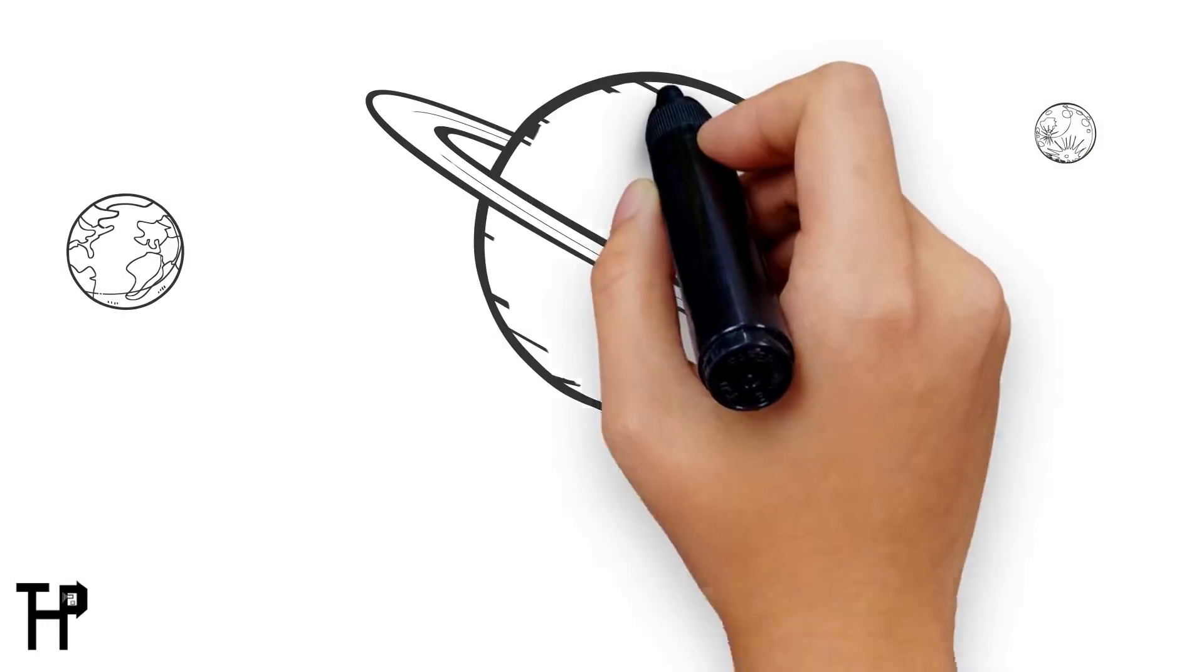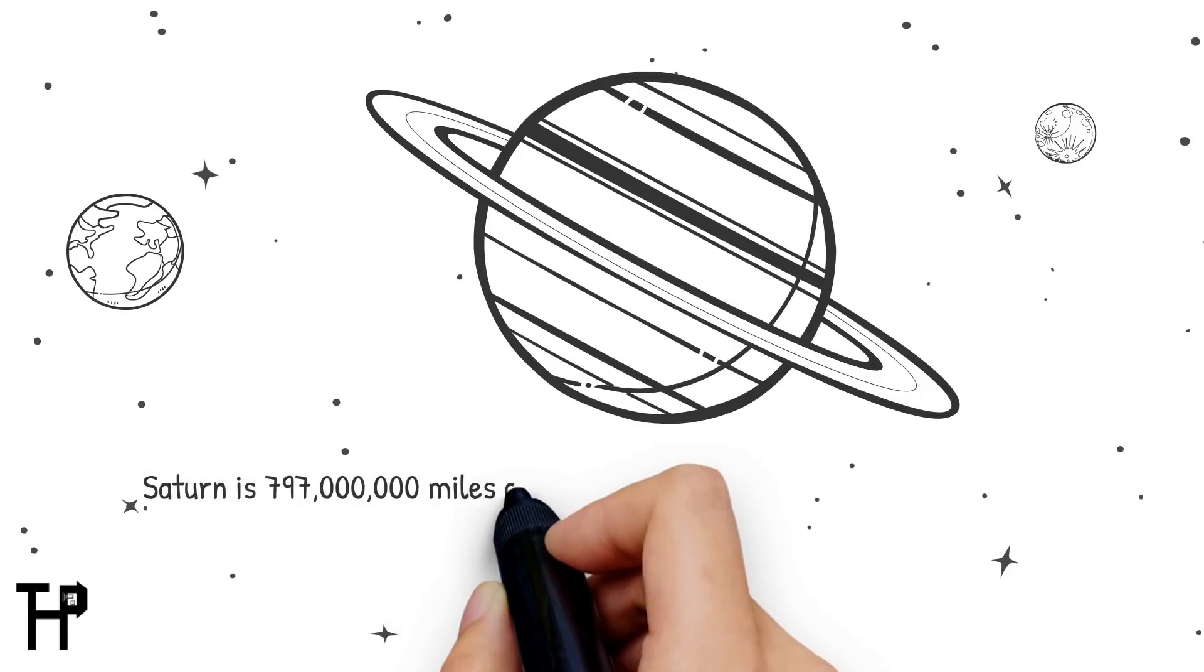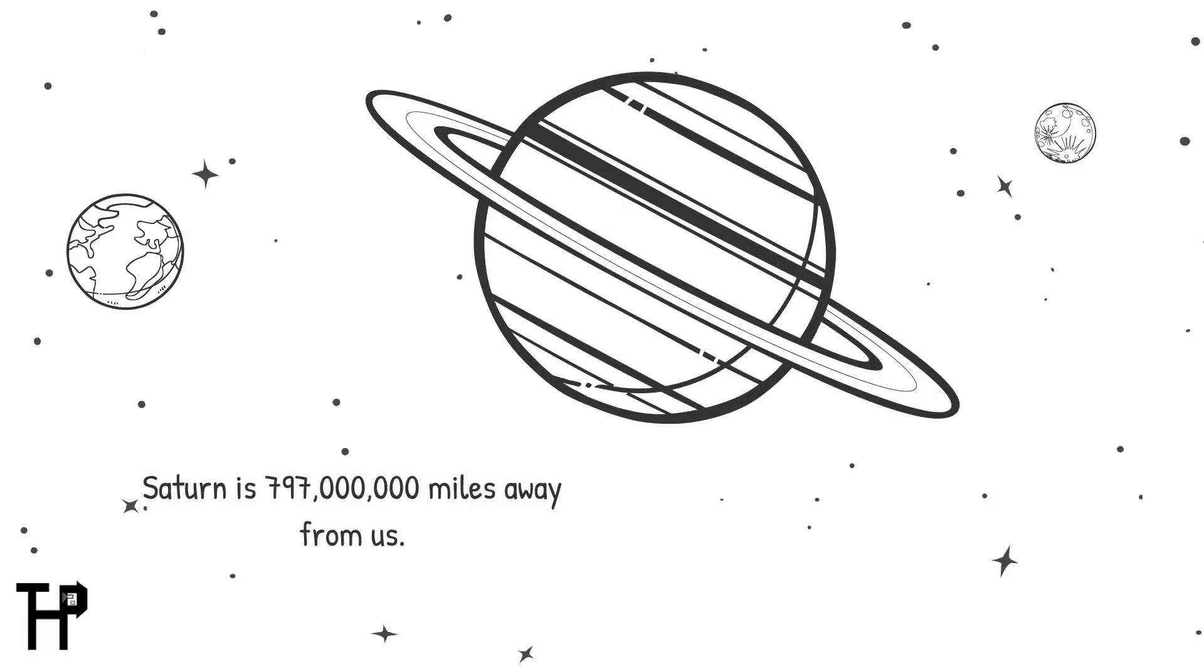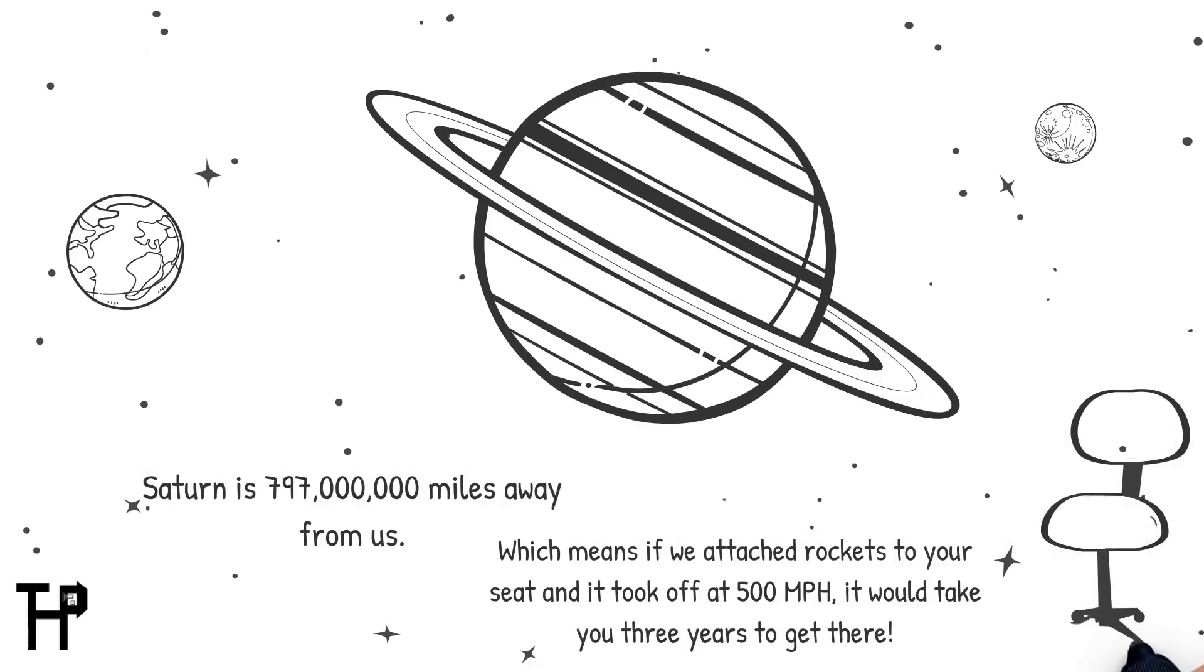Saturn is over 797 million miles away, almost 1 billion miles. Which means if we attached rockets to your seat and it took off at 500 miles per hour, it would take you three years to get there.